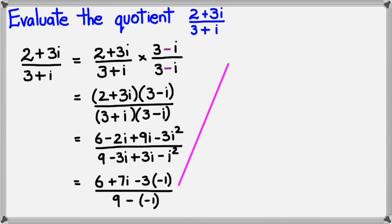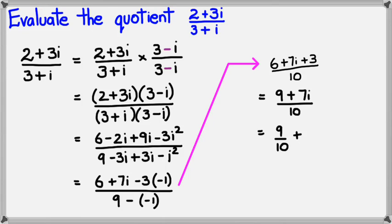So what we have is 6 plus 7i plus 3 divided by 10, because 9 minus minus 1 equals 10. We can simplify this slightly more, we'll get it as 9 plus 7i divided by 10. Now, we can separate this to real parts and imaginary parts, because the real part of this complex number would be 9 divided by 10, and the imaginary part would be 7i divided by 10.